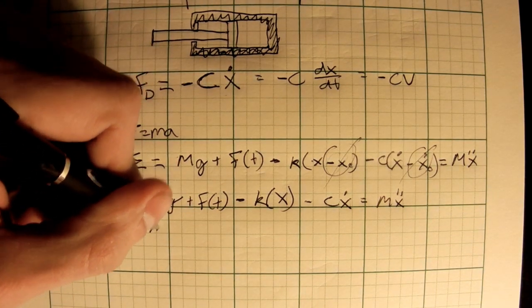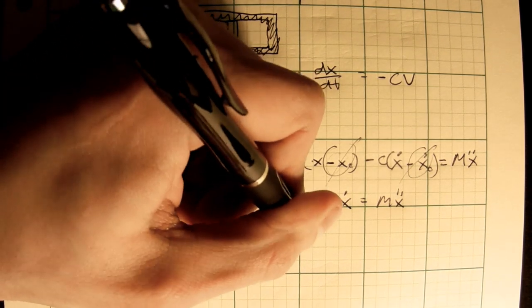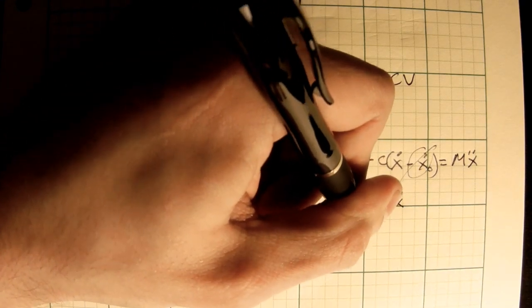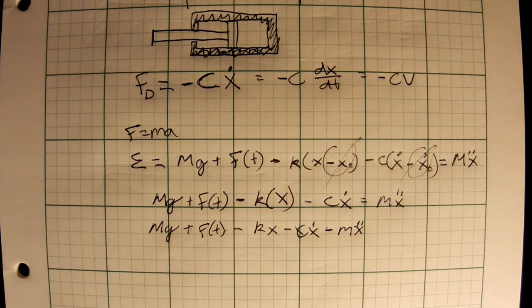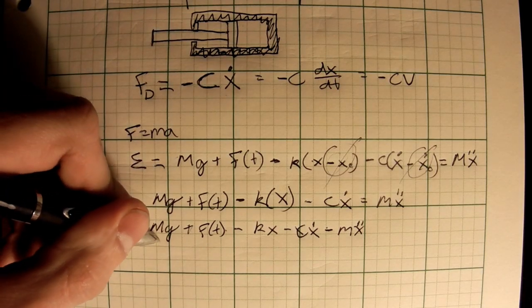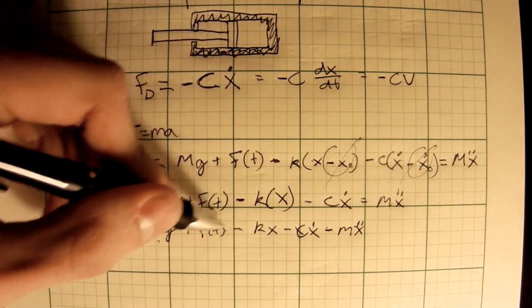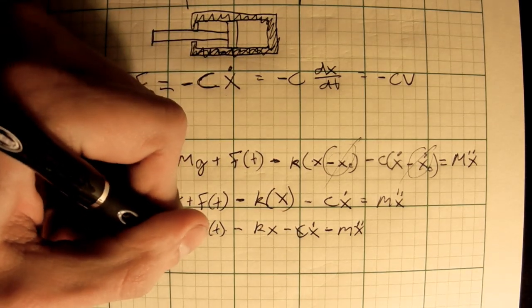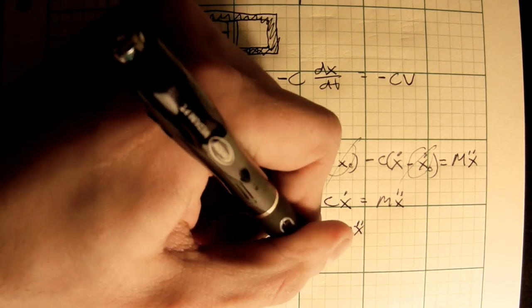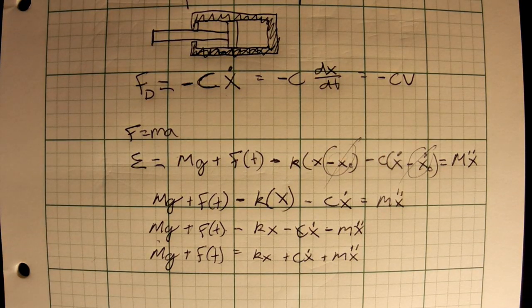So it turns out as just kx minus c x dot equals m x double dot. Now let's combine all the x's on one side. So we have mg plus f of t minus kx minus c x dot minus m x double dot. Okay. So now let's move these guys to the other side. So now we end up with something and then we can divide by negative one and then it turns out we get mg plus f of t equals kx plus c x dot plus m x double dot.